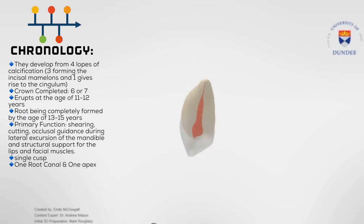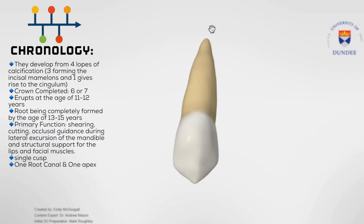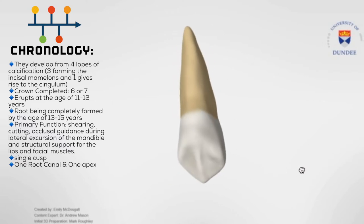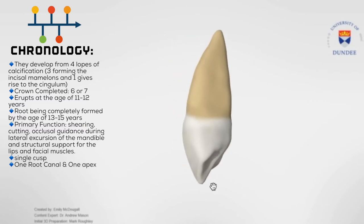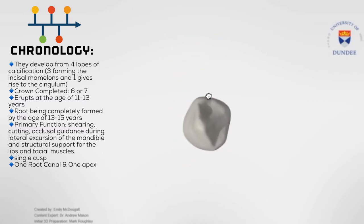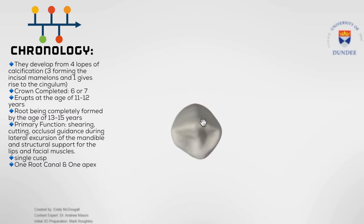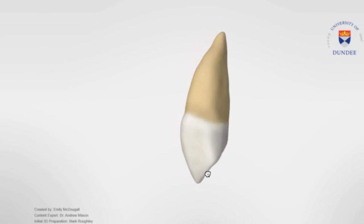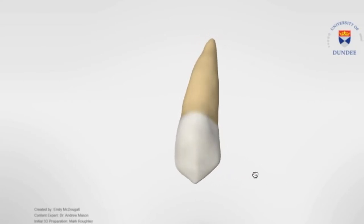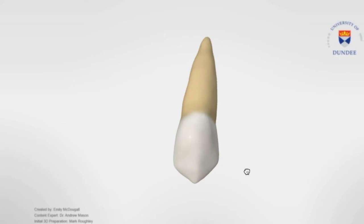We'll be looking at the morphology from four different viewing aspects, starting from the labial, then moving on to the palatal, and finishing off with the mesial and distal. We might touch on the occlusal or incisal aspect as well towards the end as a bonus, so stay tuned. For the purpose of this video we're going to be using the left maxillary canine, so the right-hand side is distal and the left-hand side is mesial.